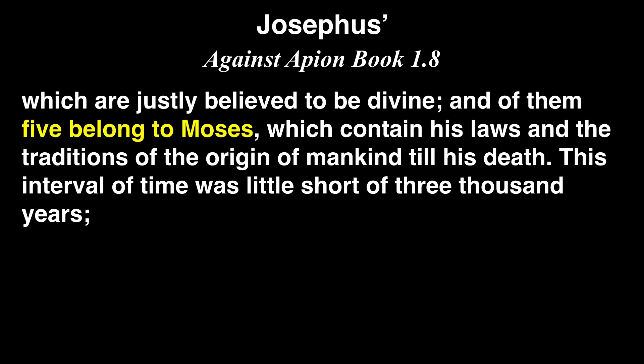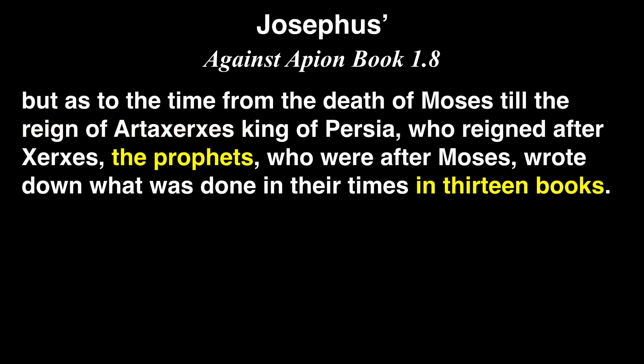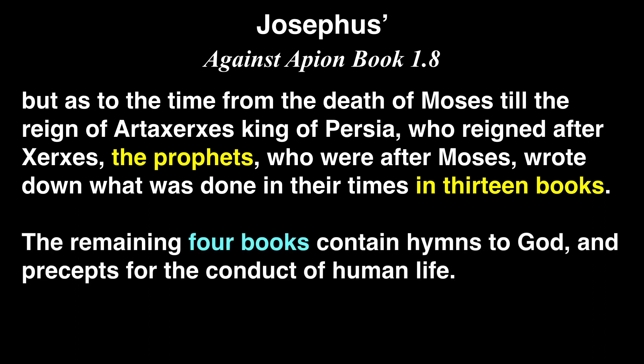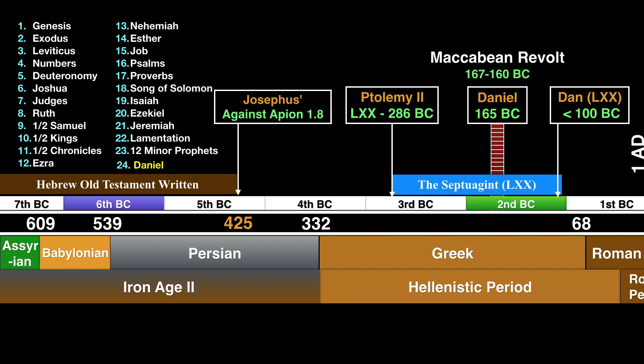Then he says: 'But as to the time from the death of Moses till the reign of Artaxerxes king of Persia, who reigned after Xerxes, the prophets who were after Moses wrote down what was done in their times in 13 books. The remaining four books contain hymns to God and precepts for the conduct of human life.' So, for the third time, Josephus disagrees with the critical view. He says Daniel and the rest of the Jewish scriptures were written before Artaxerxes' reign ended in 425 BC.